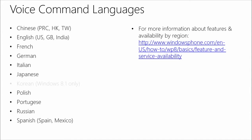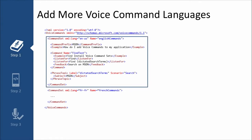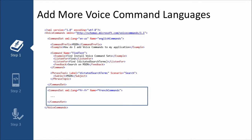I'm going to show pretty much the same slide that Nick showed earlier, because it's the same 15 languages that are supported, only I grayed out Korean, because as he mentioned, that's only available on Windows 8.1, so it's not on the phone. But those are the languages that you can support. I'm not going to walk all the way through the example, but the long and short of how to create alternate languages is this.